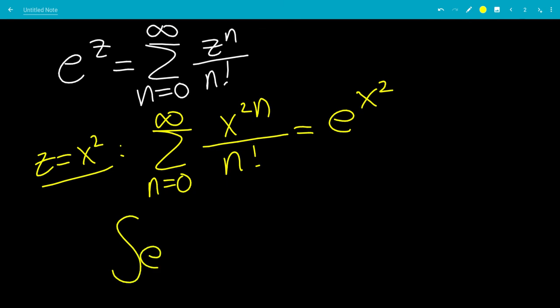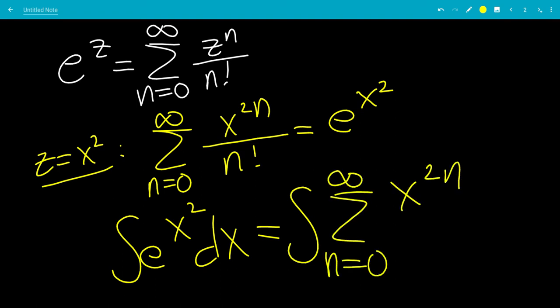So now the integral of e to the x squared will be the integral of the sum from n goes from 0 to infinity, x to the 2n over n factorial dx.